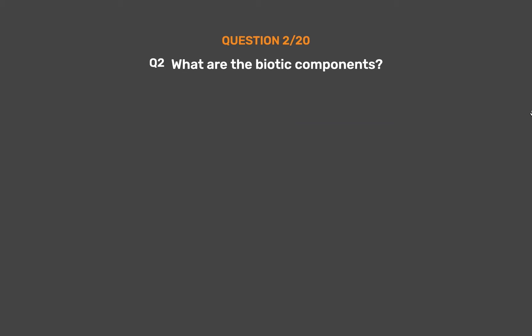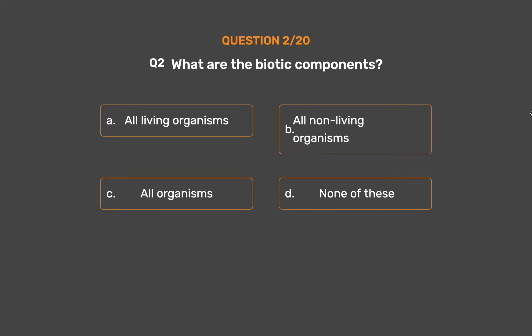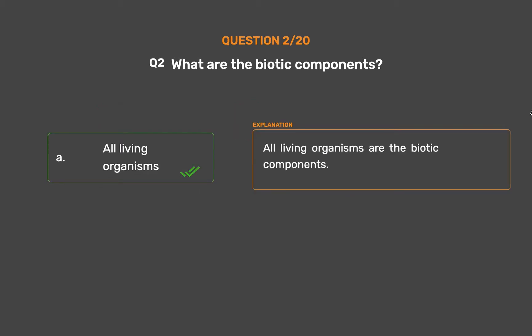Question number 2: What are the biotic components? Option A: All living organisms, Option B: All non-living organisms, Option C: All organisms, Option D: None of these. The correct answer is Option A, All living organisms. All living organisms are the biotic components.